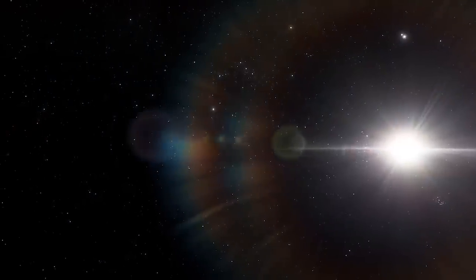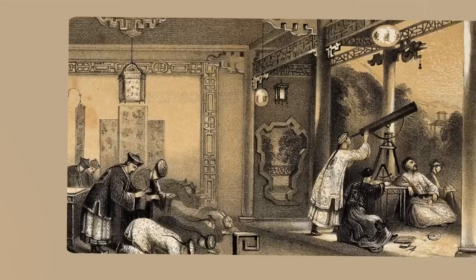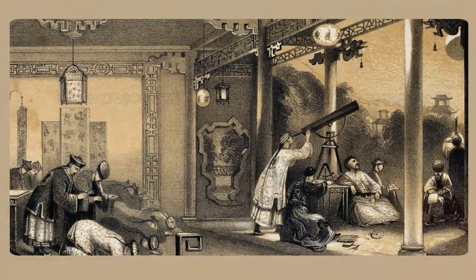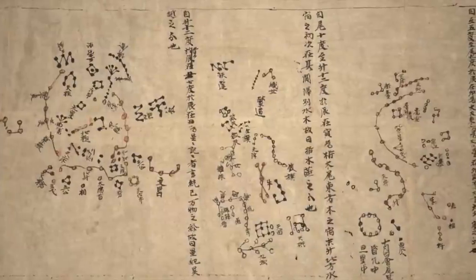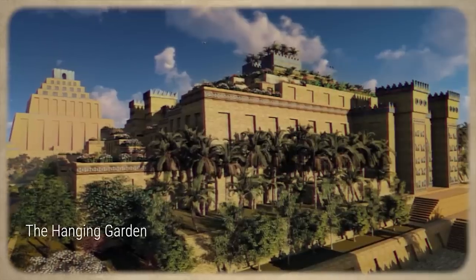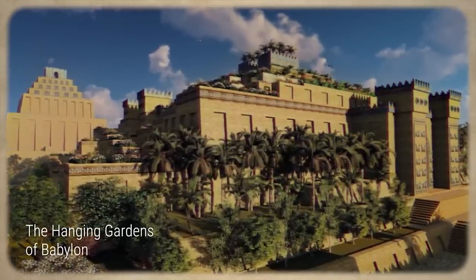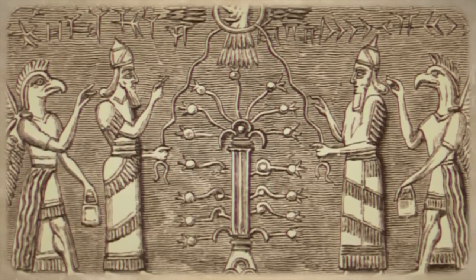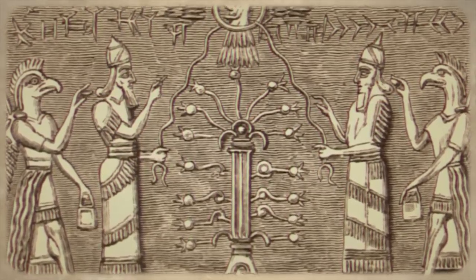In 2300 BC, the Chinese named some stars. 500 years later, the Babylonians established star catalogues, in which they recorded and archived their astronomical observations.